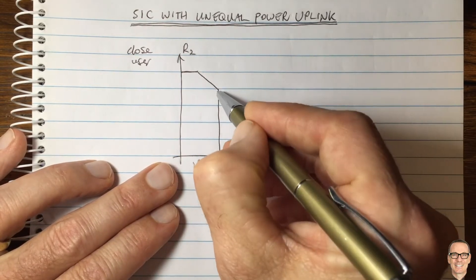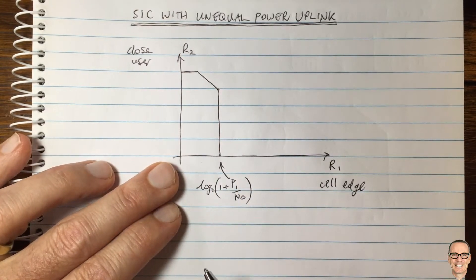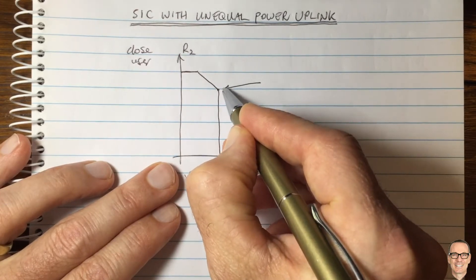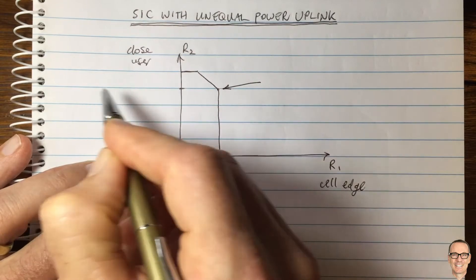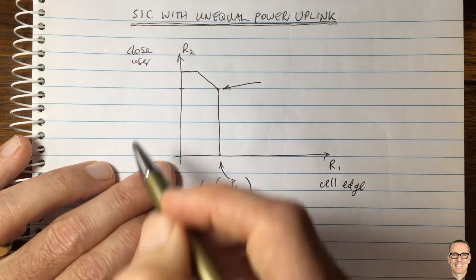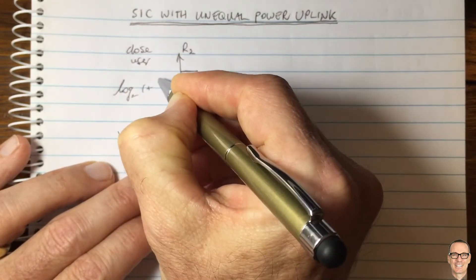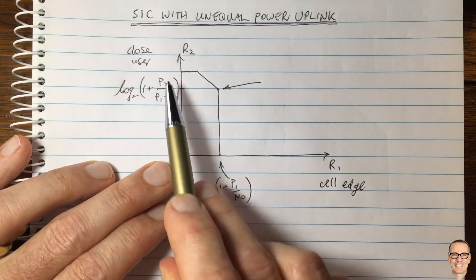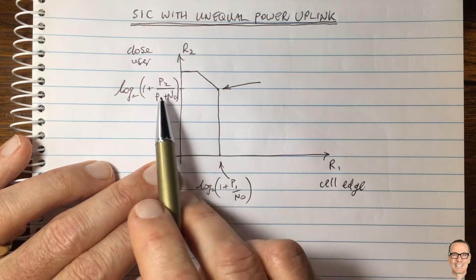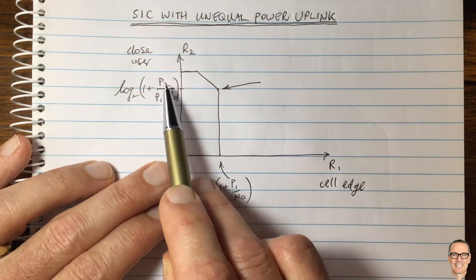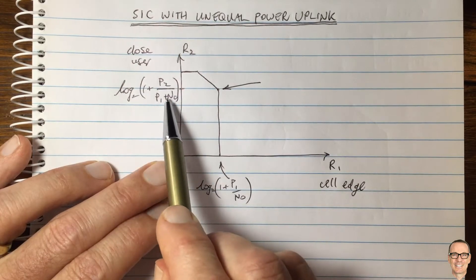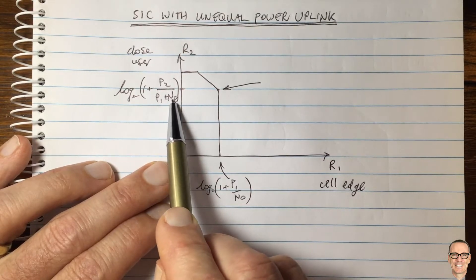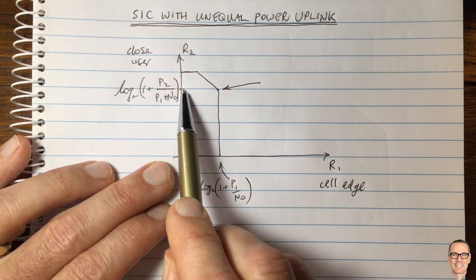What we would normally do is decode the strong user first. That's a common understanding, and some people believe that's the only thing you do in NOMA. User 2 can send at a rate of log base 2 of 1 plus P2 received divided by P1 received plus the noise. As far as user 2 is concerned, the signal from user 1 is noise — it's interference. So when decoding user 2, you treat user 1's signal as noise, and its contribution adds to the Gaussian noise in the receiver.